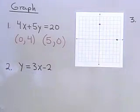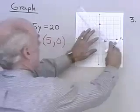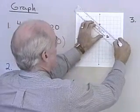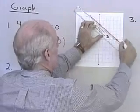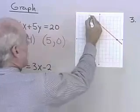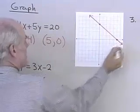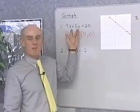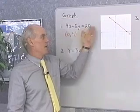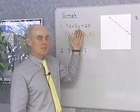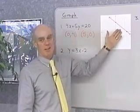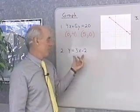What I want to do is draw a line between those two points. And that line will represent the graph of this equation. I connect those two points with a straight line. And that line is the graph of 4x plus 5y is equal to 20. Every point on this line has coordinates that satisfy this equation. And every ordered pair that satisfies this equation has a graph that lies on this line. Let's look at another equation.